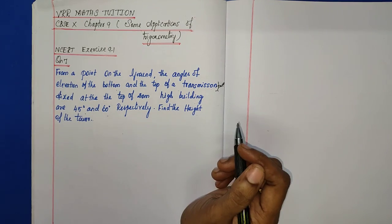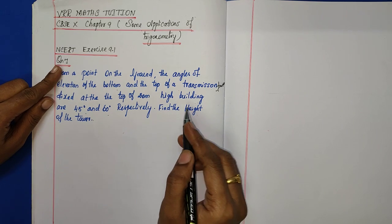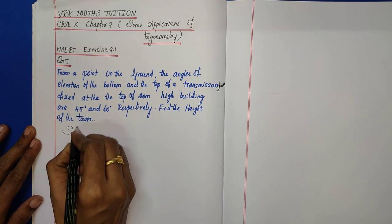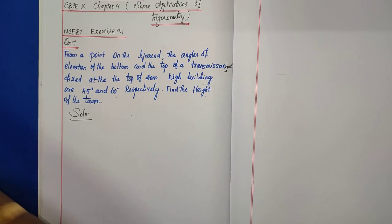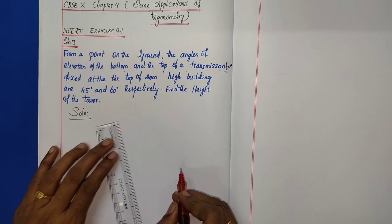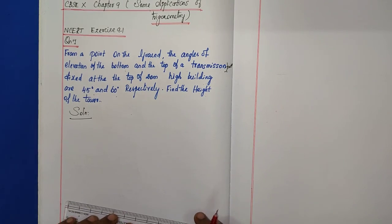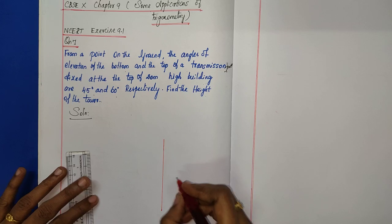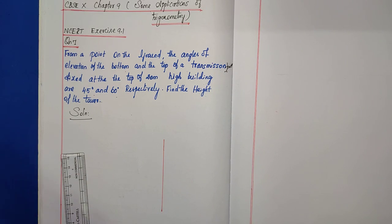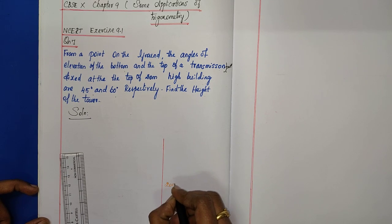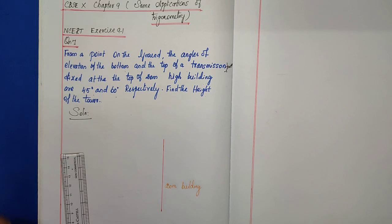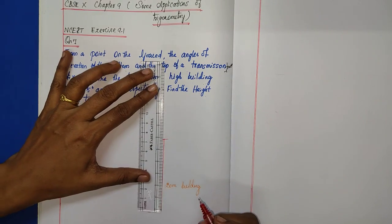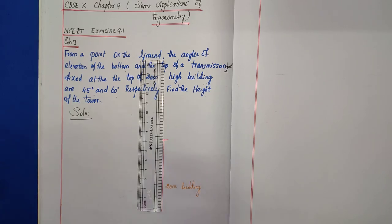First, draw the diagram for this question. We have a 20 meter high building with the transmission tower placed at the top of it. Draw the 20 meter high building, then place the transmission tower on top.